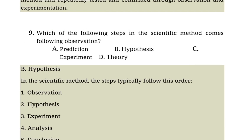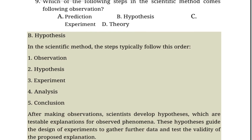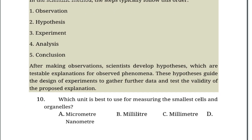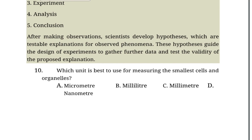Which step in the scientific method comes following observation? A. Prediction. B. Hypothesis. C. Experiment. D. Theory. In the scientific method, the step that typically follows observation is hypothesis.